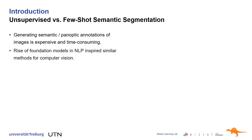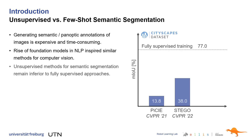Second, inspired by the foundation models seen in natural language processing, the vision community has produced similar methods such as CLIP, Segment Anything, or DINOv2. As a consequence, some recent works exploit these visual foundation models for unsupervised semantic segmentation. However, their performance remains inferior to fully supervised approaches.